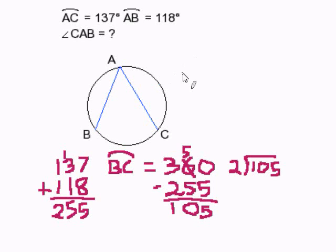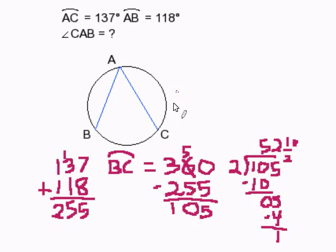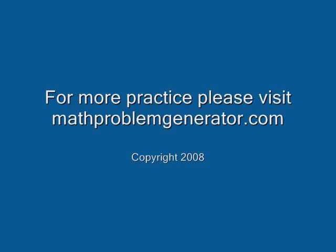So 105 divided by 2, that gives us 52 and a half degrees. So the measure of angle CAB is 52 and a half degrees. And that completes our problem.